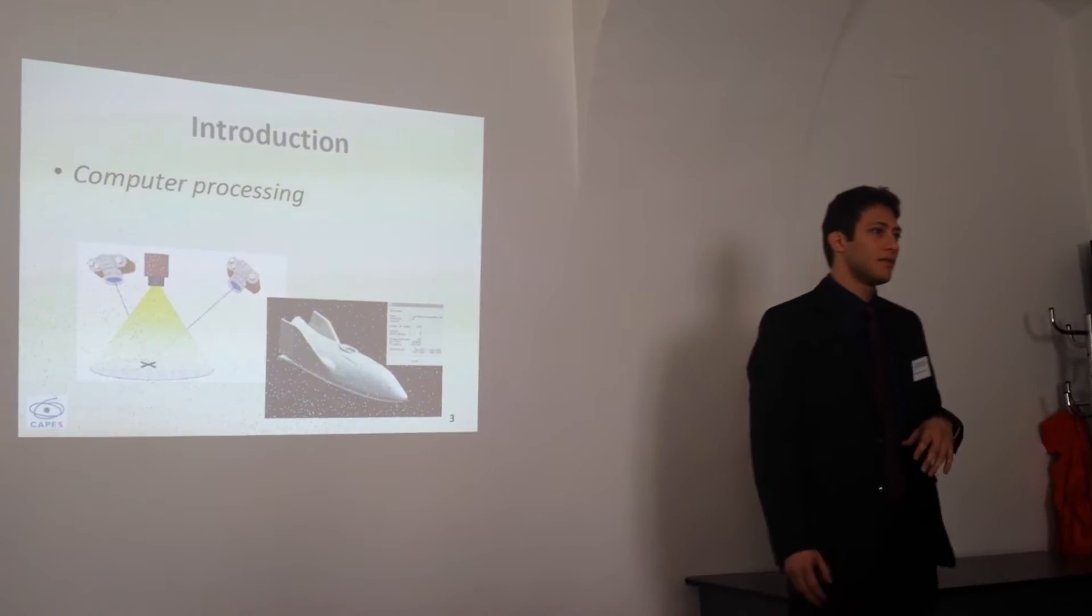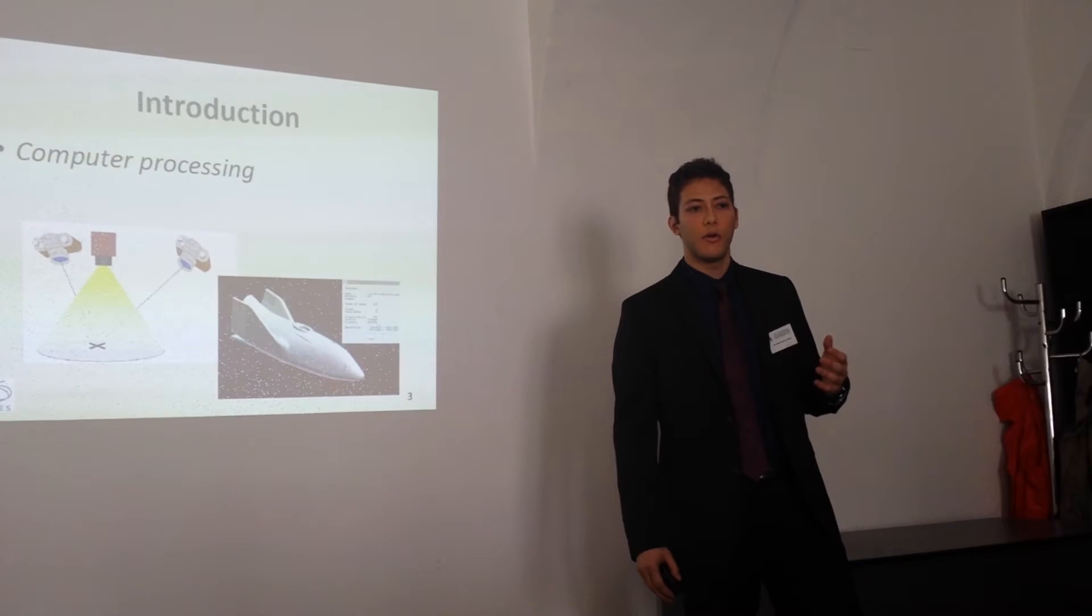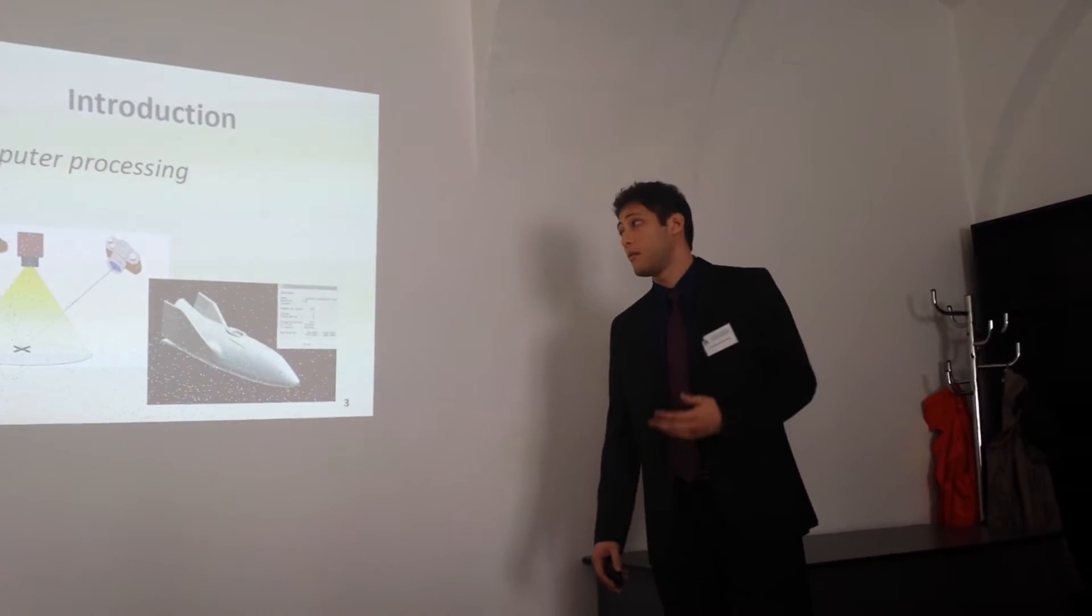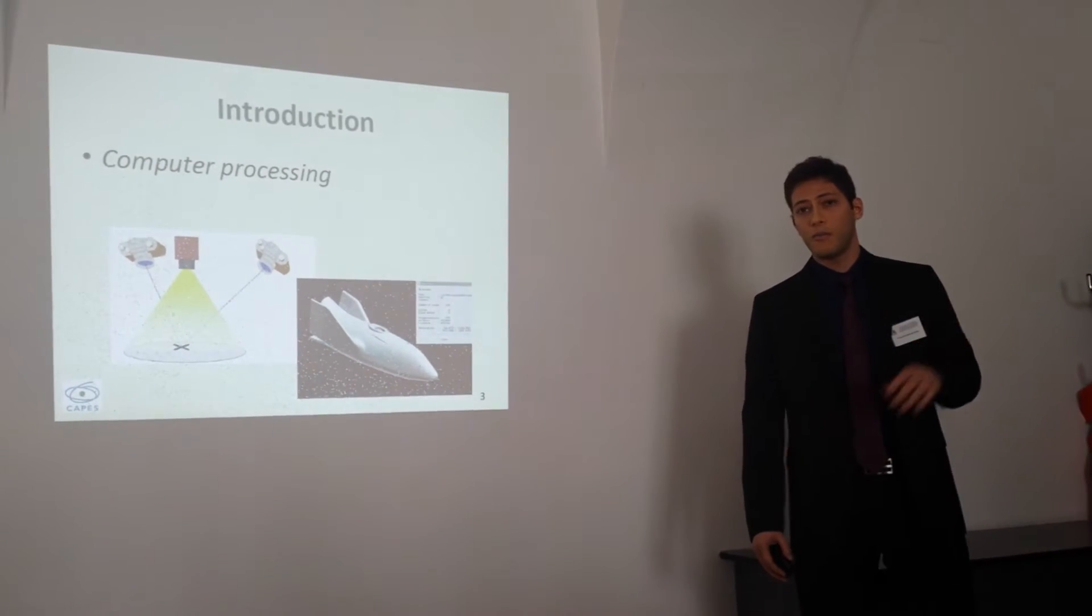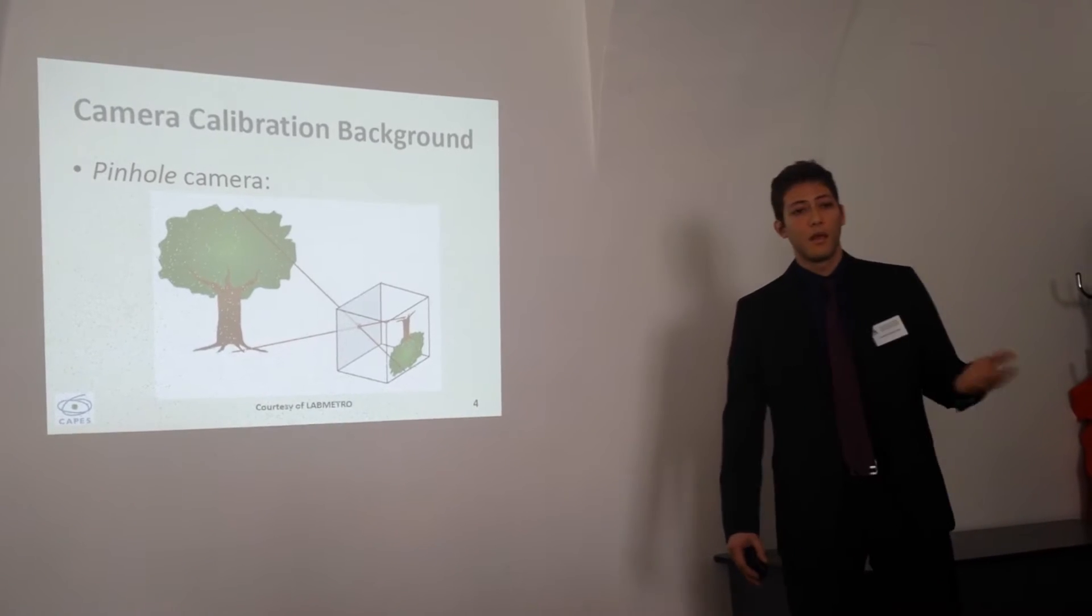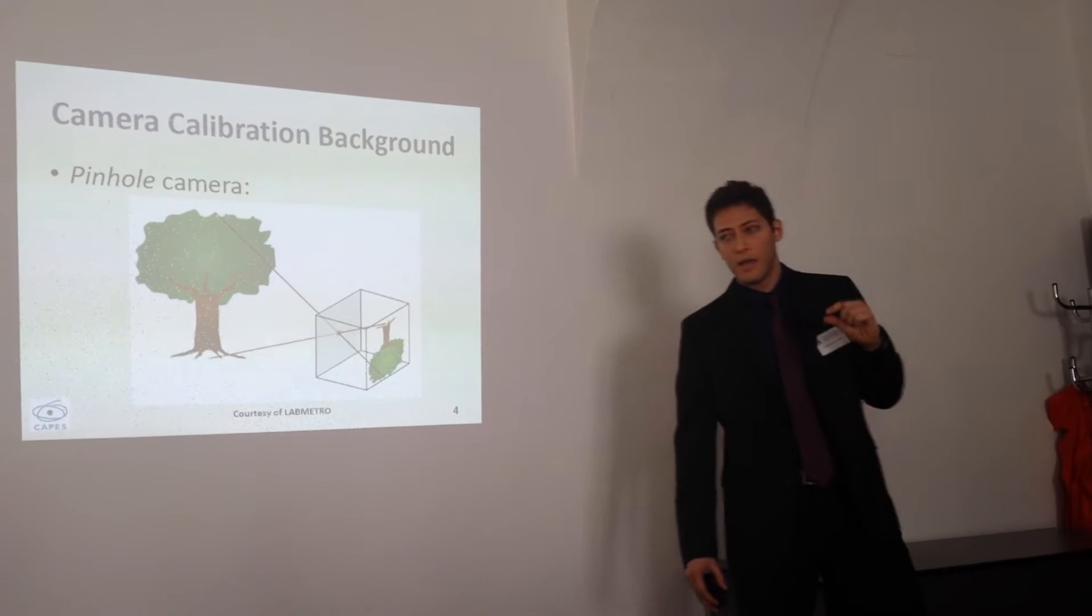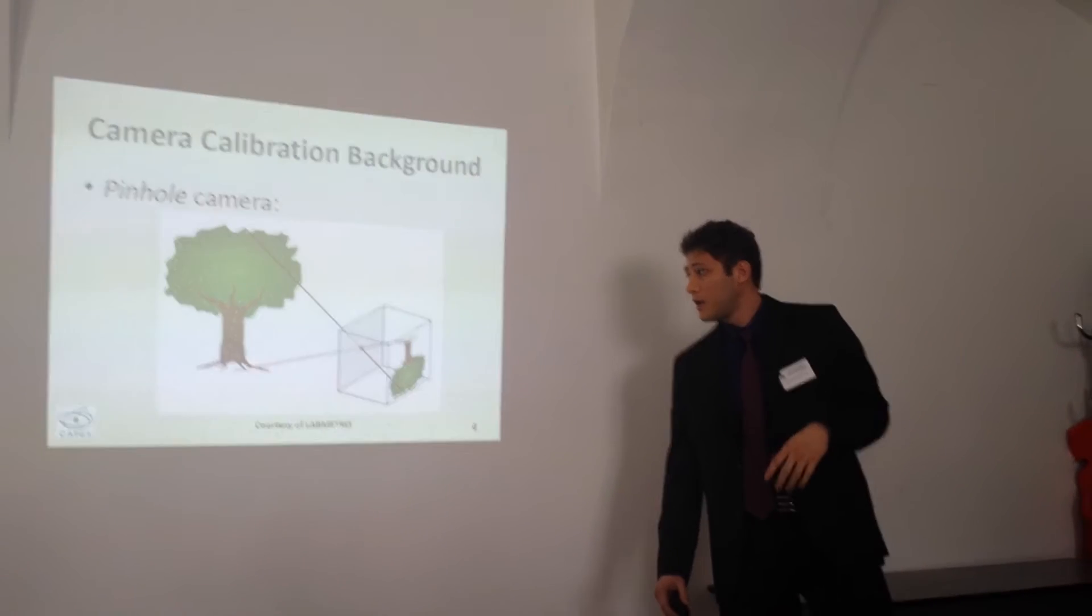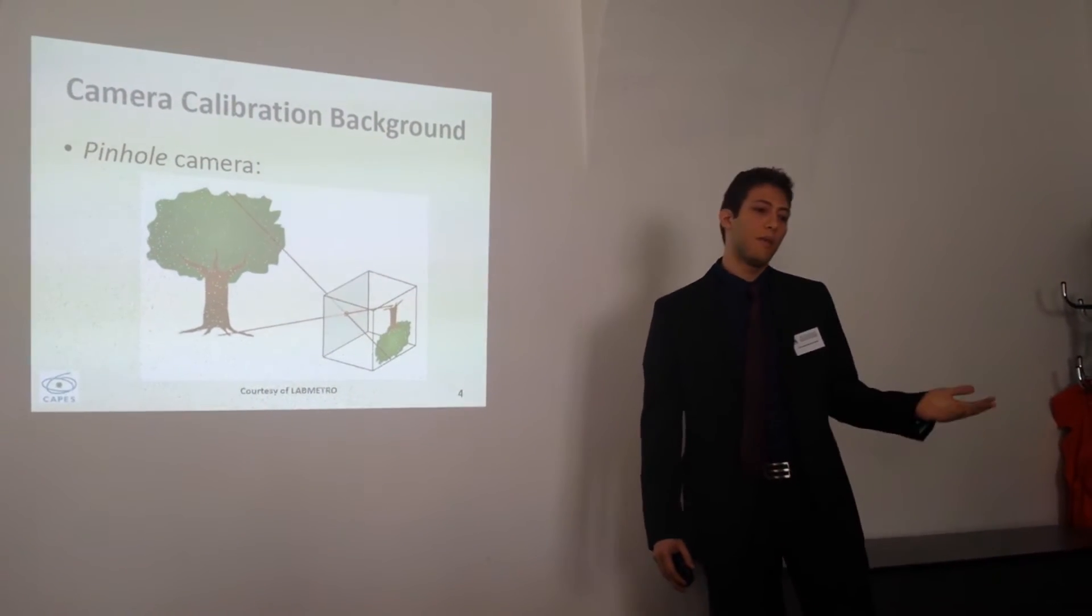Computer processing is a very new area nowadays, and it's very important to have a good calibration of camera because with it you can do a lot of applications. One of them is you can take photos and reconstruct a 3D model from 2D points. A basic concept is a pinhole camera, a camera with an invisible hole where the light passes through and projects a real and inverted image. This concept is very important to understand the mathematical point.